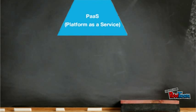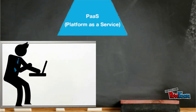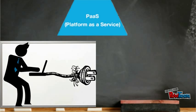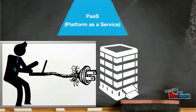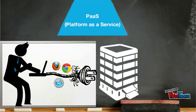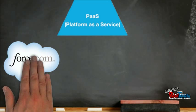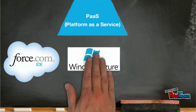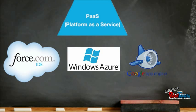Platform as a service is defined as a computing platform being delivered as a service. This means that you develop applications using web-based tools so that they can run on system software and hardware provided by another company. Some examples include Force.com, Windows Azure, and the Google App Engine.